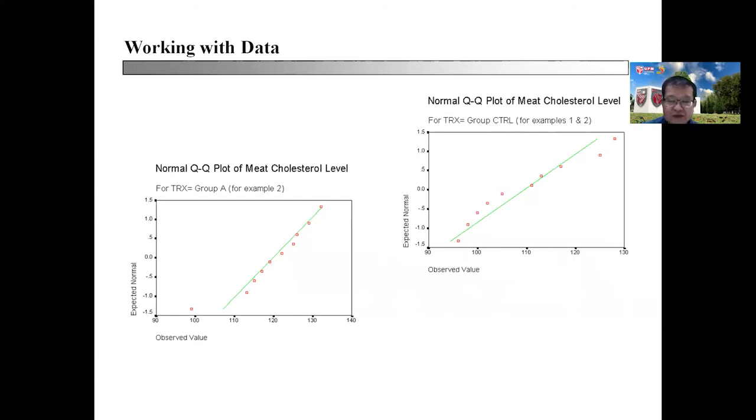Apart from that, you can also use the normal QQ plot to determine whether the data is normally distributed or not. In this case, we know they are normally distributed when the values are all equally spaced above and below this equal probability line indicated here.